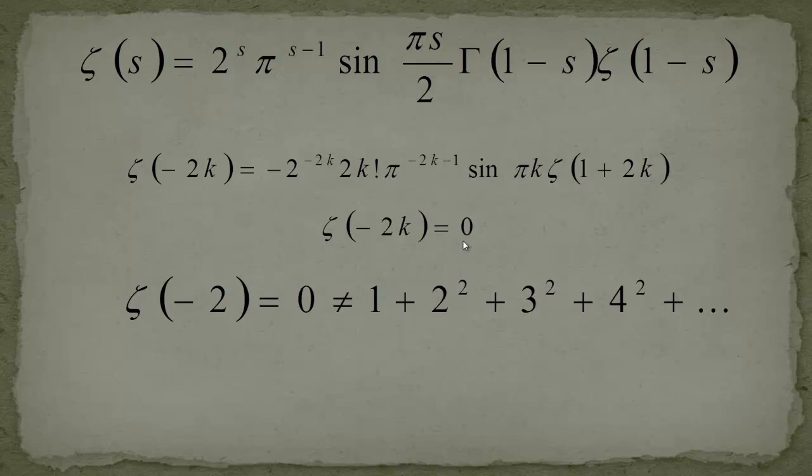Okay now there is a little bit of confusion about this expression because if we know that ζ(-2) = 0, many people say how can that be? Because they write down the zeta function in its original way writing 1 + 1/2^s and so forth.